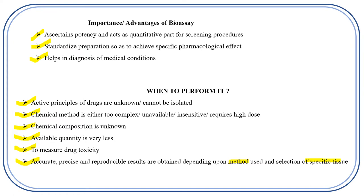We must consider a specific tissue for a specific pharmacological activity. For example, for evaluating vasodilatory effect or screening antihypertensive drugs, we use aortic tissue or heart preparations. For evaluating diarrheal activity, we use ileum tissue. The physiological salt solution used also becomes a determining factor — for cardiac tissues we use Krebs solution, and for ileum preparations we use Tyrode solution.